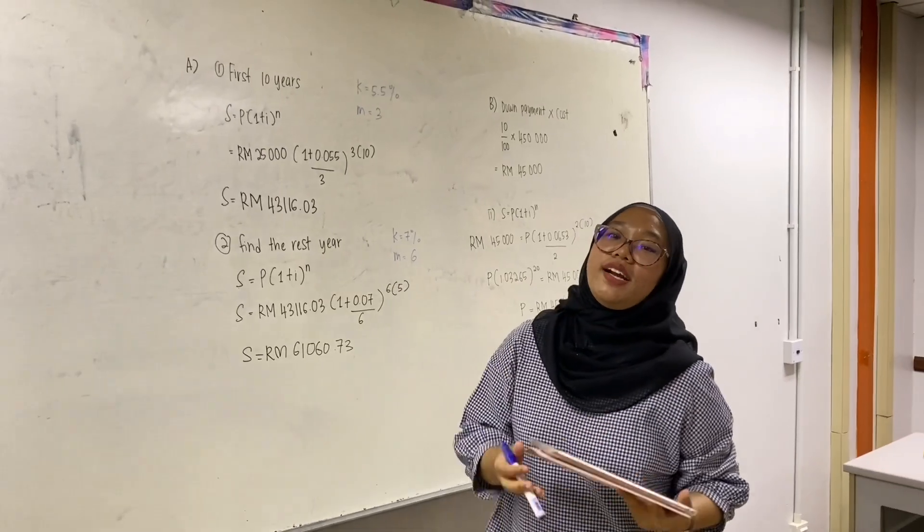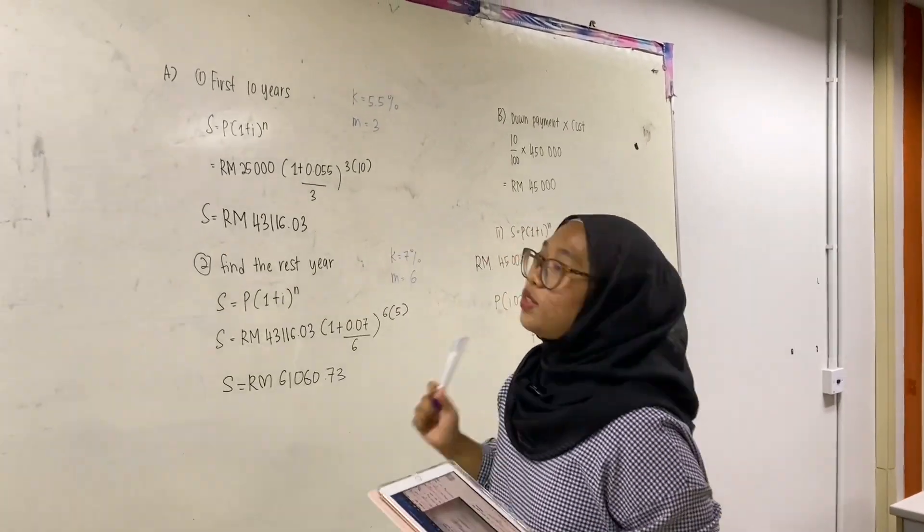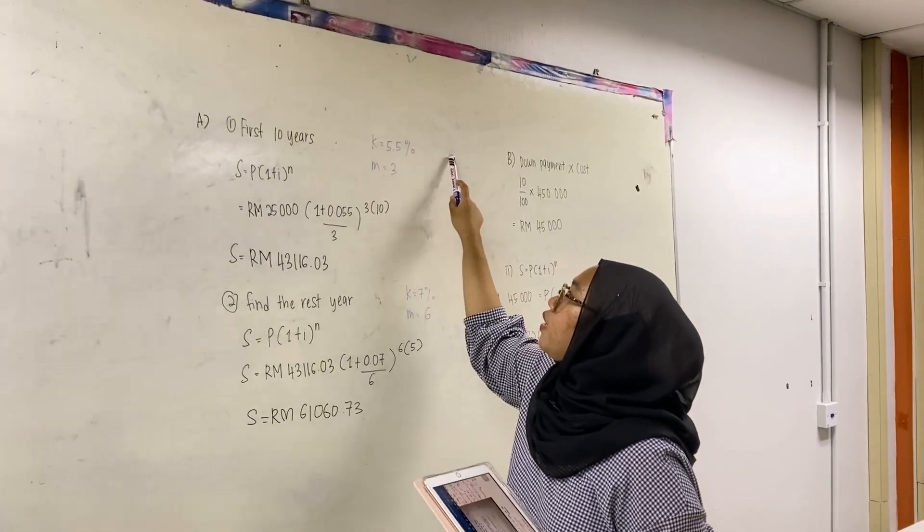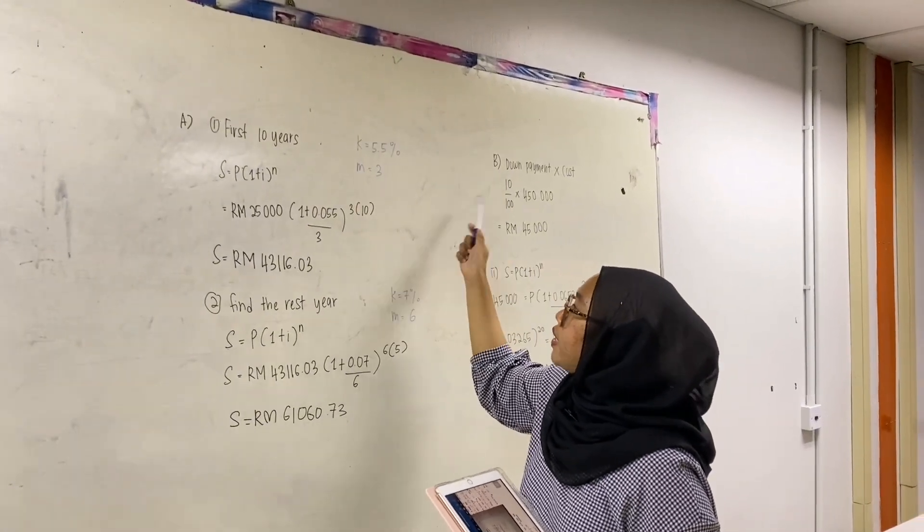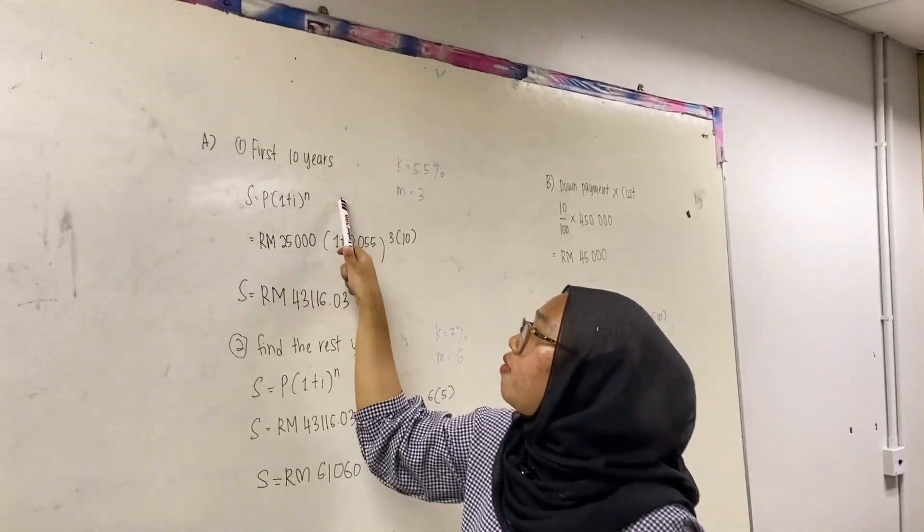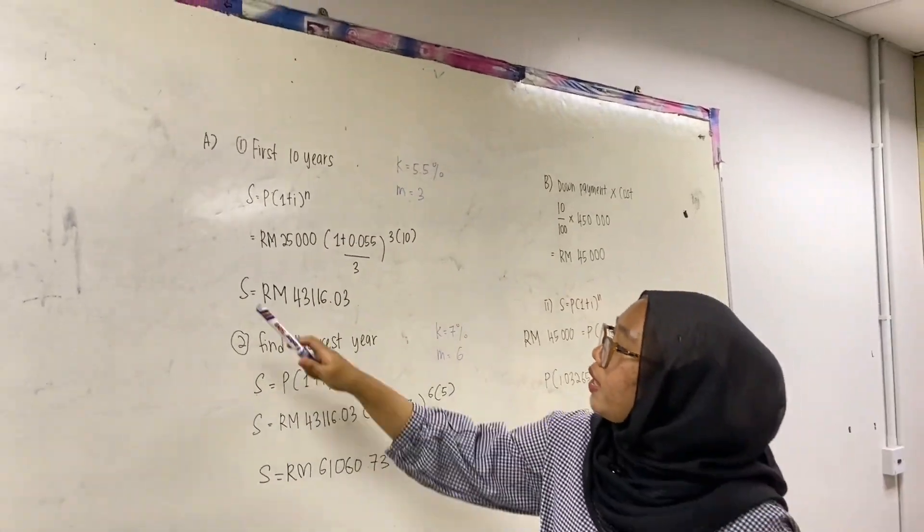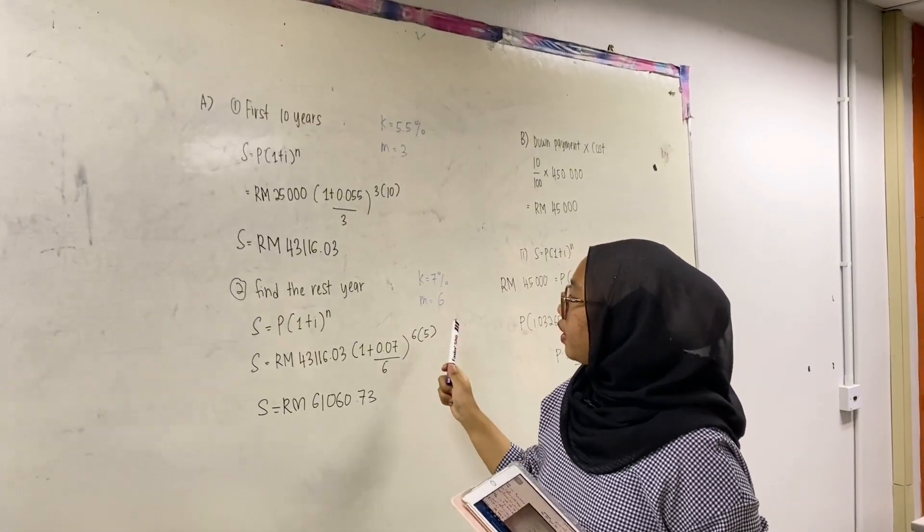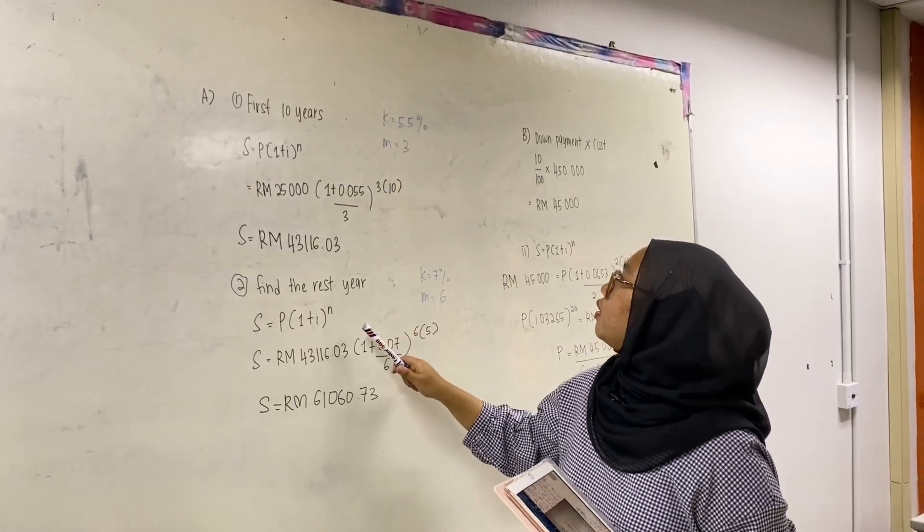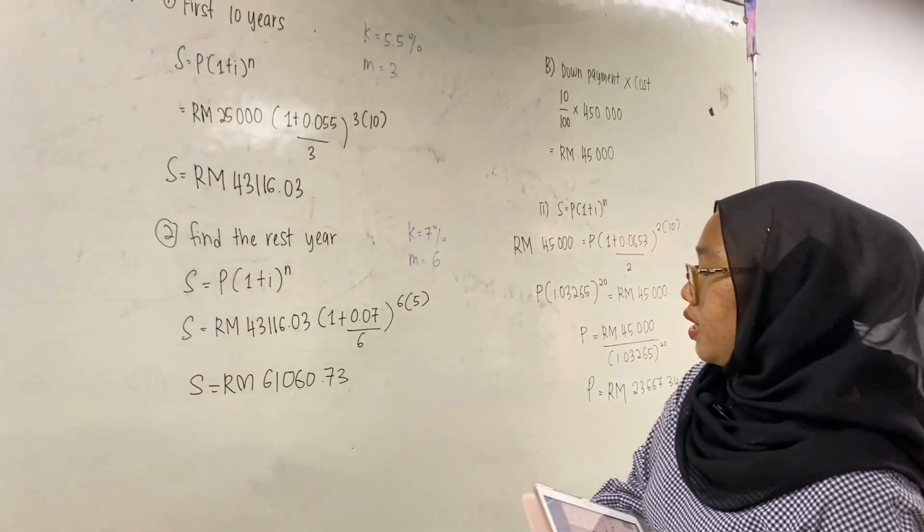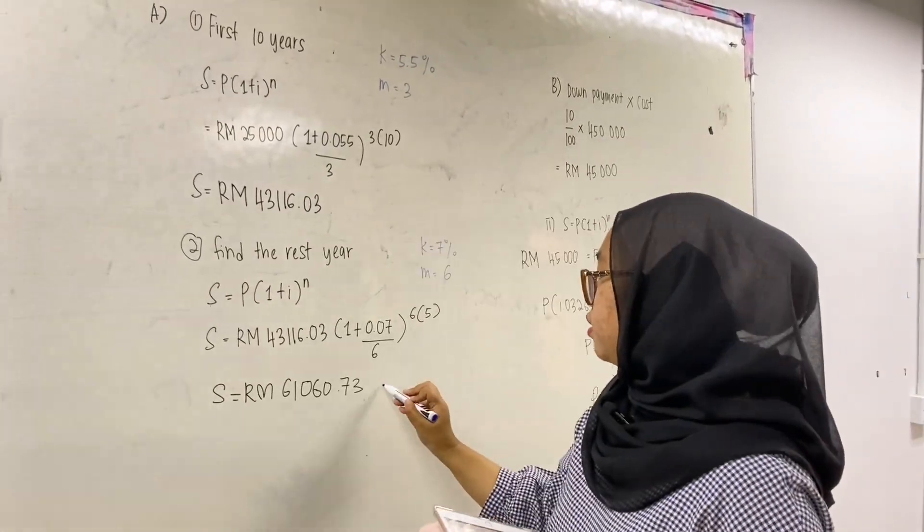So let's take a look at the answer for Question 1 Part A. First of all, you need to find the first 10 years first, which is this will be the keyword. K equals 5.5% and M equals 3. So we will use this kind of formula. We will get the answer for the first 10 years. Next, we need to find the rest of the years using the same formula. This is the keyword. We will get the final answer which is $61,060.